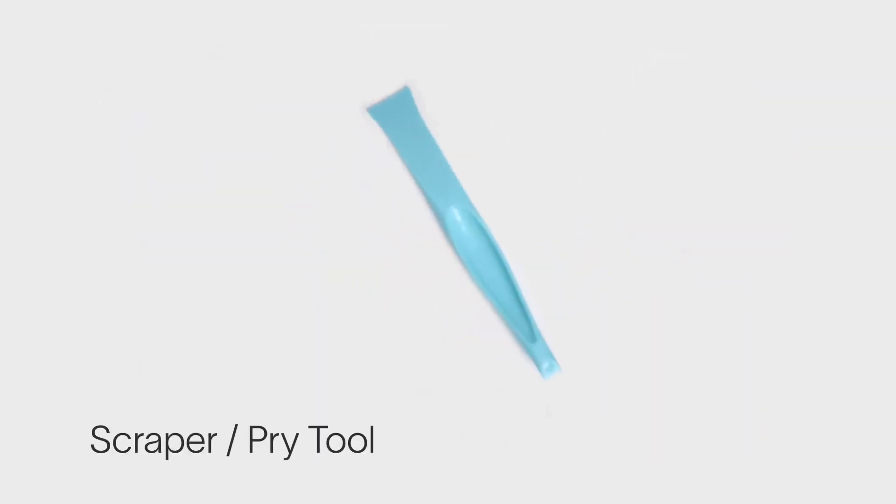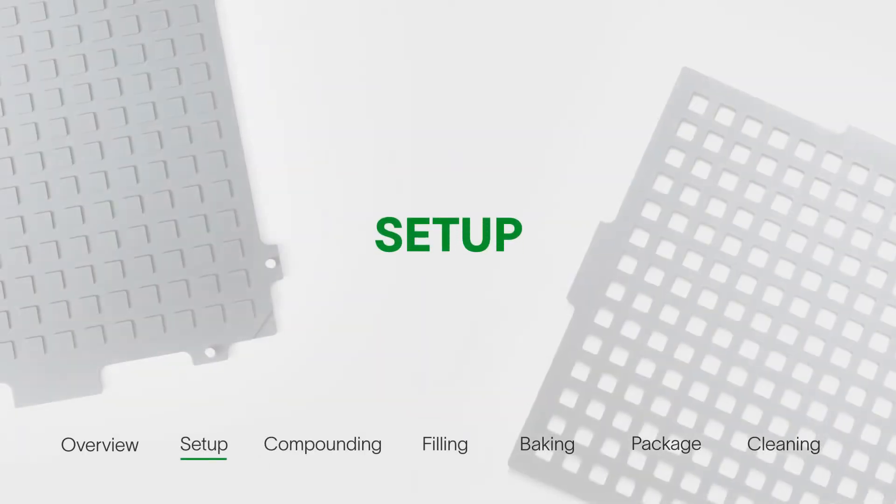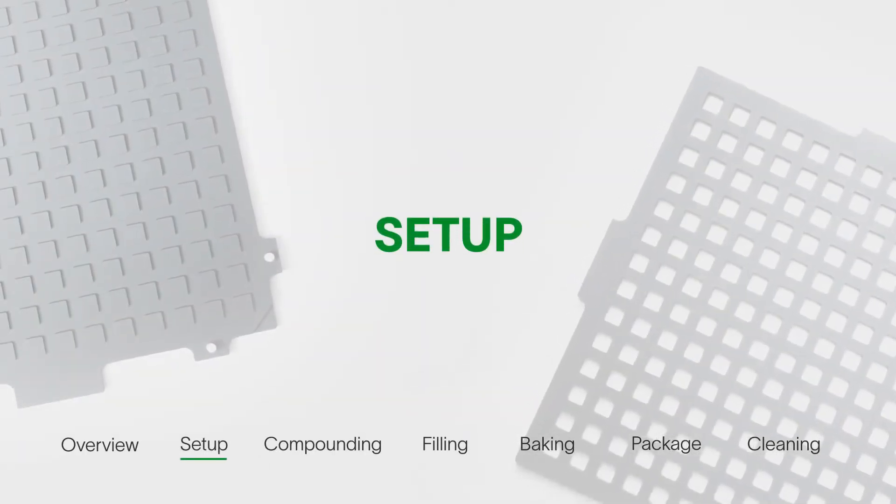Last is the scraper or pry tool that allows you to easily separate the plates to smoothly extract the RDTs. Now that we've reviewed the key parts included, it's time to set up the mold and get cooking.